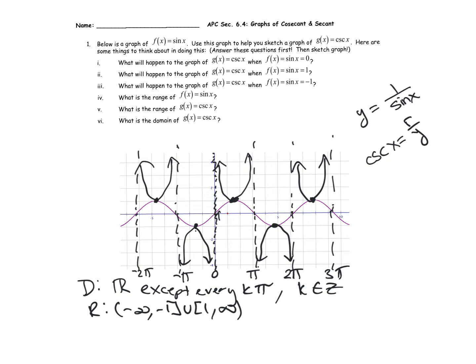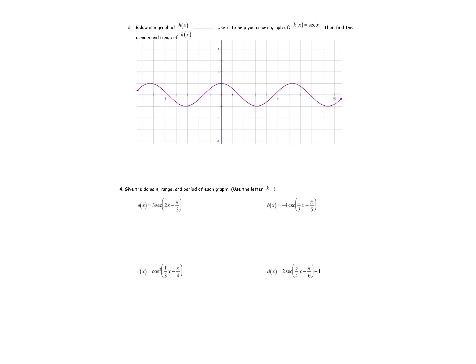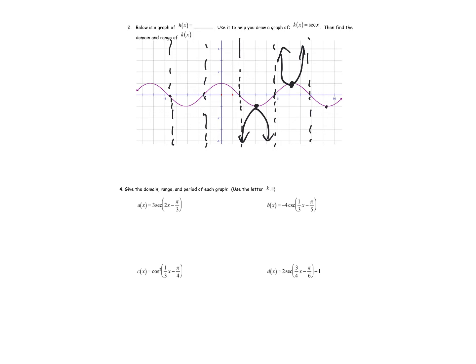Now let's do a similar basic graph for secant of x. Here is the cosine function. Just like we did with cosecant, where cosine is zero, secant is going to be undefined. So where the graph hits the x-axis, I'm going to put my asymptotes. As you might expect, the graph is going to look extremely similar to cosecant of x, just as sine and cosine relate by a phase shift — the same is true with cosecant and secant.